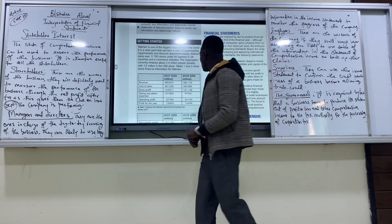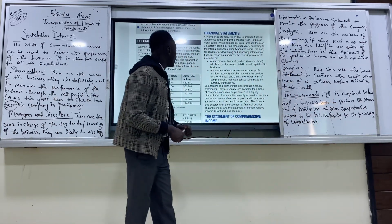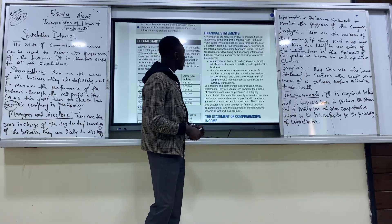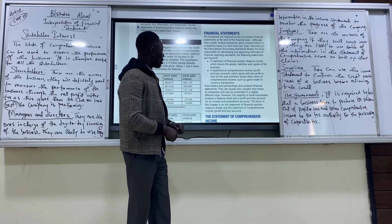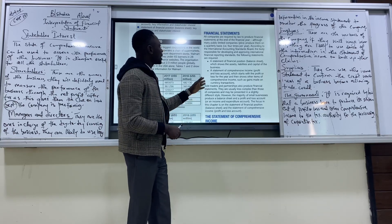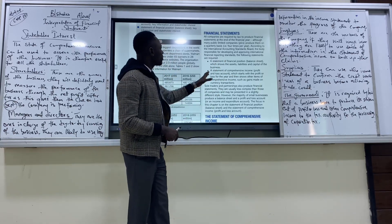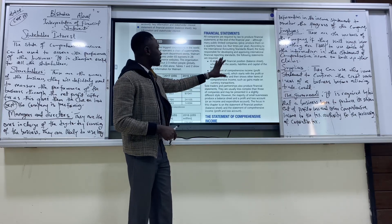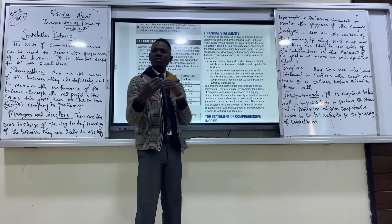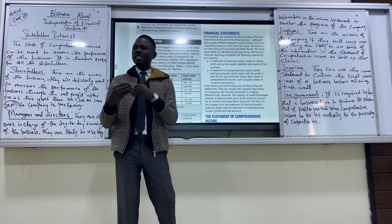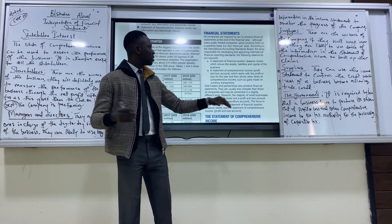Financial Statements: all companies are required by law to produce a financial statement at the end of the financial year, although many public limited companies produce them on a quarterly basis, according to the International Accounting Standards, IASS. The body is responsible for developing and approving international financial reporting standards. The following statements are required — these are things you have to provide according to law.